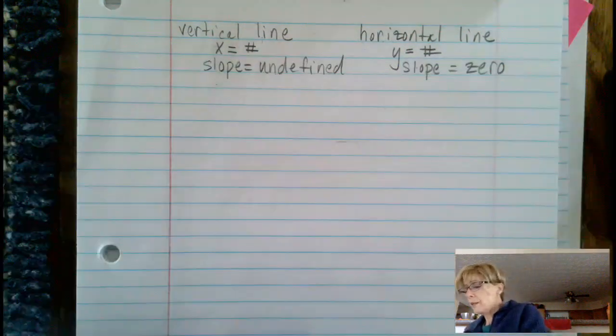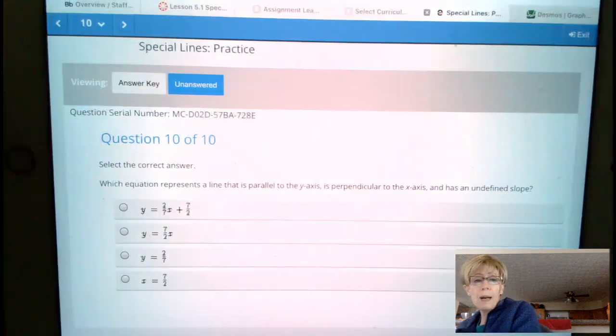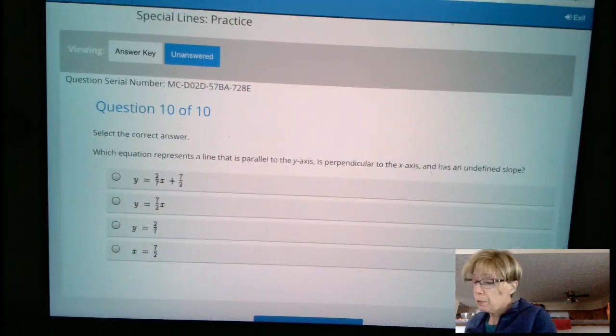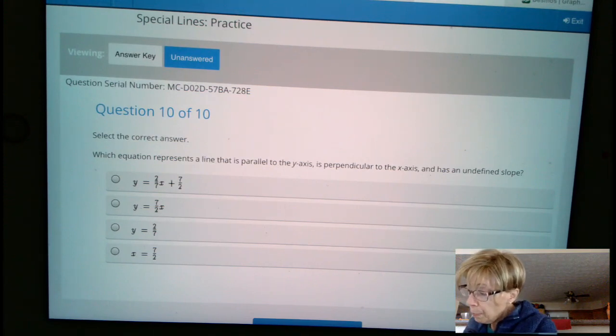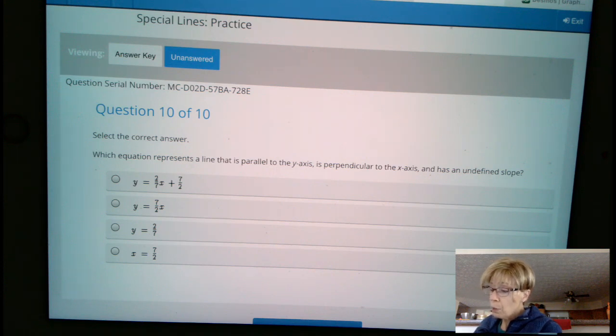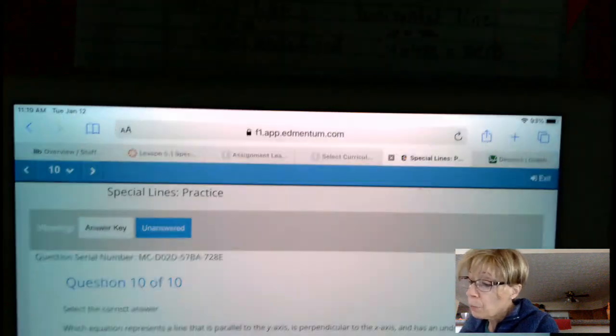when we go back to the question, it says parallel to the y-axis, perpendicular to the x-axis and has undefined slope. Well, undefined slope means it's a vertical line, which is going to be the only choice on here, which is x equals 7 halves.